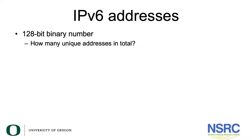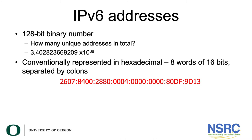In this section we're going to be talking about IPv6 addresses. IPv6 addresses are 128-bit binary numbers. If you have 128 bits, how many unique addresses are you going to have in total? Remember with binary mathematics, you're going to have 2 to the power of 128 bits, which equals 3.40 times 10 to the power of 38 possible IPv6 addresses.